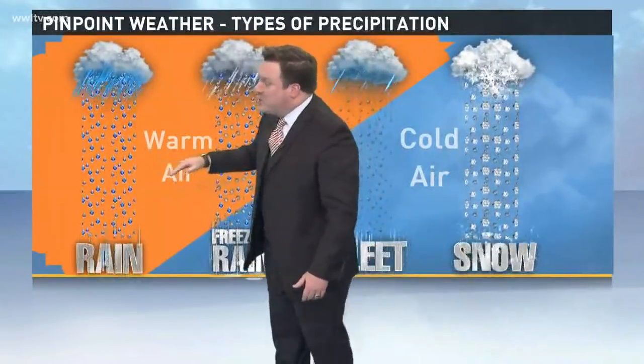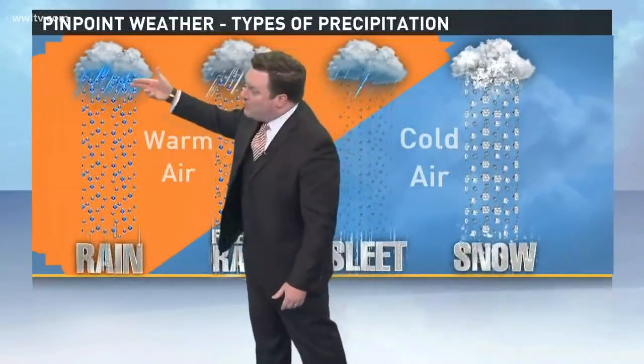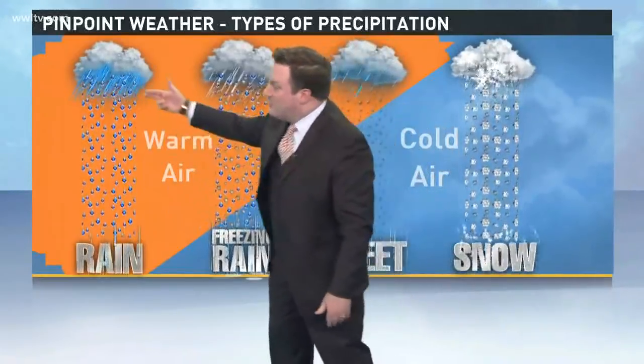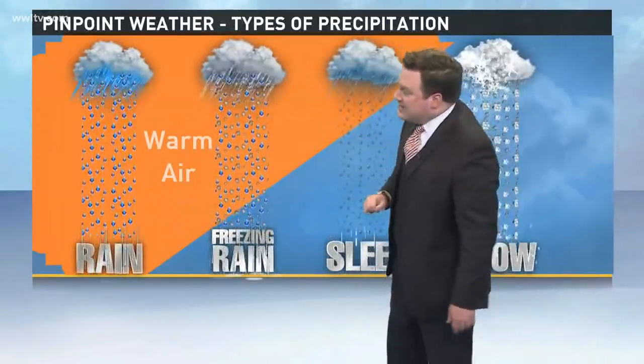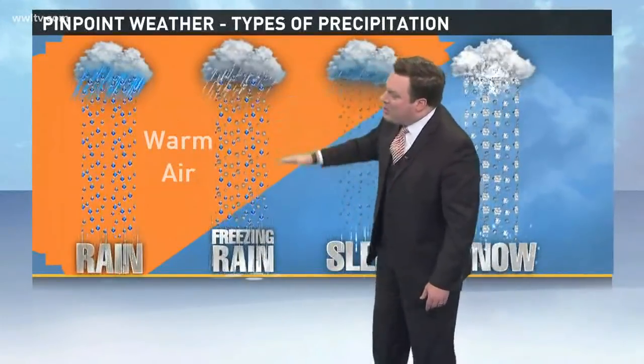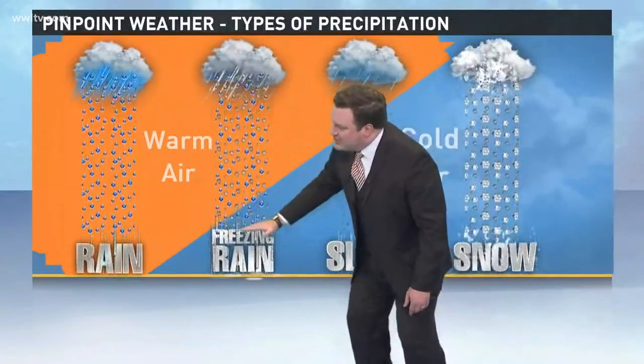In terms of rain, you're getting warm air where that moisture falls through a very warm column, and warm means just above freezing. It doesn't have to be very warm to us, but above freezing. So rain falls as a liquid, never refreezes, and you get rain at the surface.